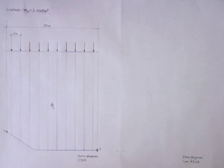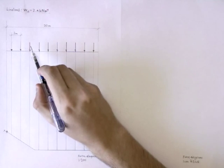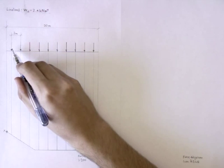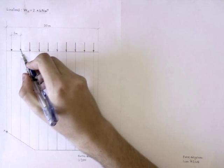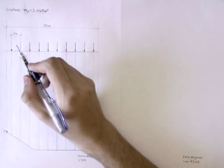First, you have to take your line load and convert it into single point loads. You know what is the distance between the two point loads, so you know how much line load there is for one point load.